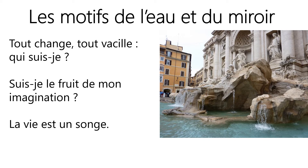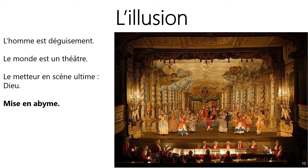Dans un monde qui change en permanence, les individus sont amenés à s'interroger sur leur identité personnelle. Qui suis-je ? Suis-je le fruit de mon imagination ? Pour l'artiste baroque, la vie n'est qu'un songe. Si le monde n'est qu'un réservoir d'illusions et si la vie est un songe, alors le monde n'est qu'un théâtre. Et si le monde est un théâtre, alors la place que chacun occupe dans ce monde n'est qu'un rôle, et l'homme se réduit à son déguisement. Pour l'artiste baroque, si le monde est un théâtre, il faut bien qu'il y ait un metteur en scène suprême. Ce metteur en scène ultime, c'est Dieu. La vie est un théâtre où chacun joue un rôle mis en scène par Dieu. La mise en abîme est le principe par excellence du courant baroque.